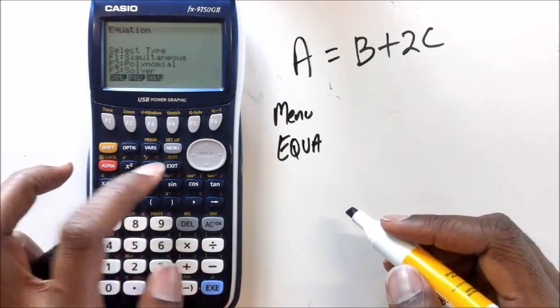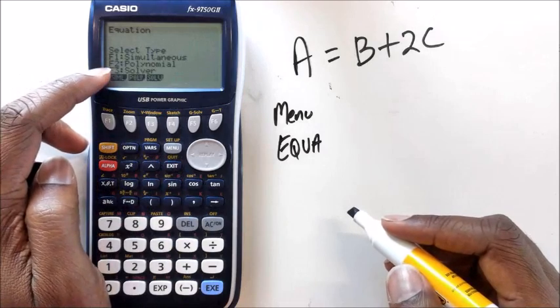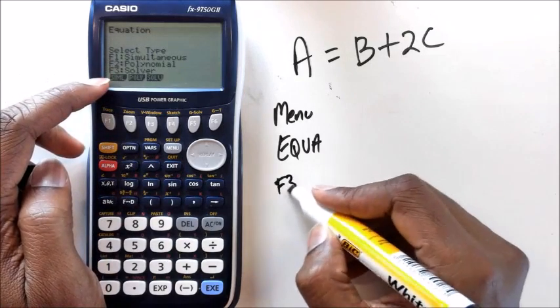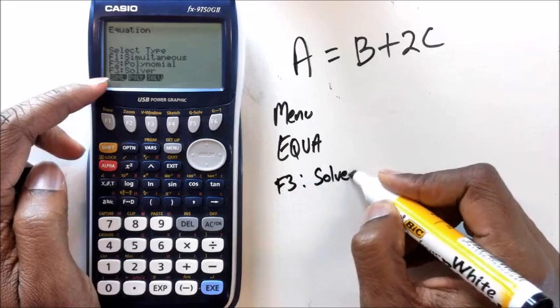Once you click that, you're going to end up with Simultaneous, Polynomial or Solver. So you want to press F3 which is Solver.